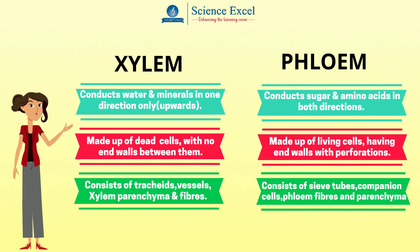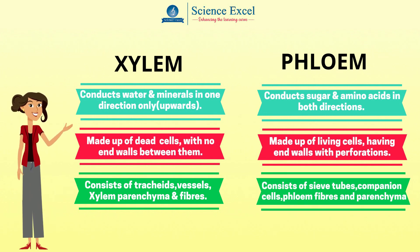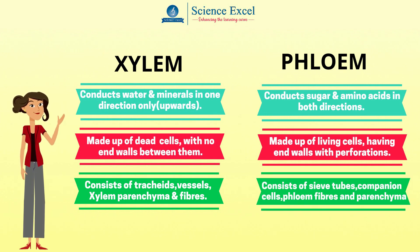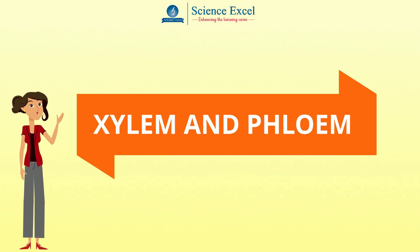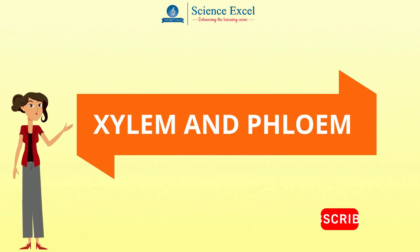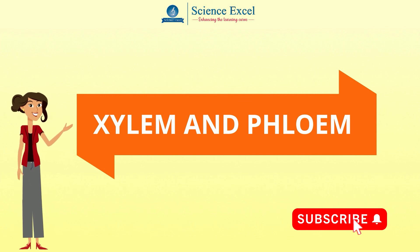Phloem is made up of sieve tubes, companion cells, phloem fibers and phloem parenchyma cells. This concludes our tutorial on xylem and phloem.